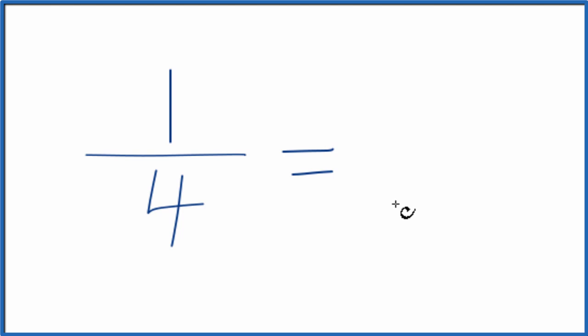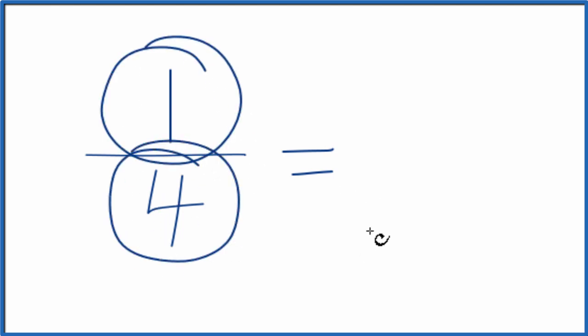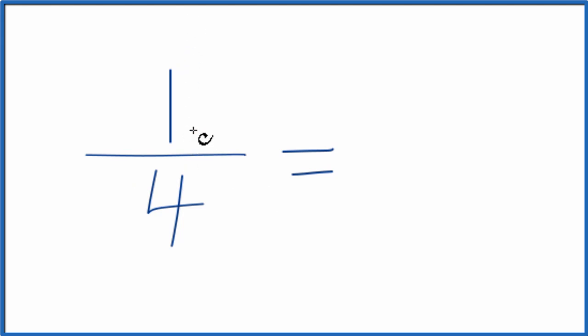To do that, we need to find a common factor, something that goes into both 1 and 4 evenly. When we look at the fraction 1 fourth, the only thing that'll go into both 1 and 4 is 1.